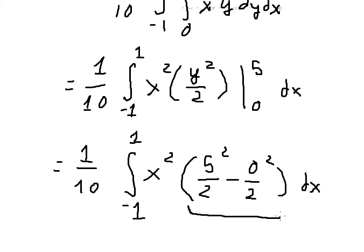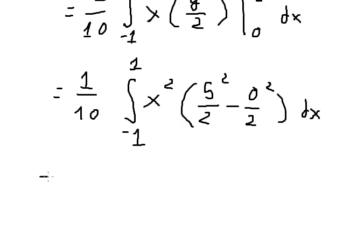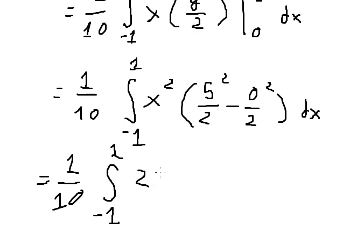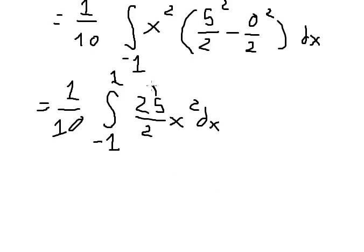We calculate and get 25 over 2. Then 25 over 2 multiplied by one over 10 gives us five over four.